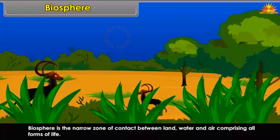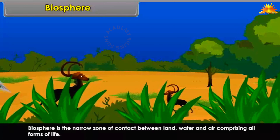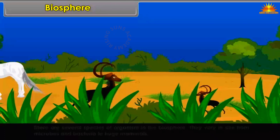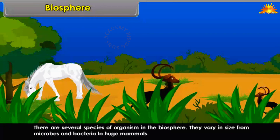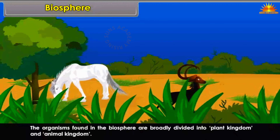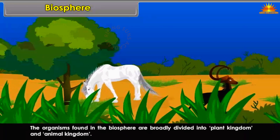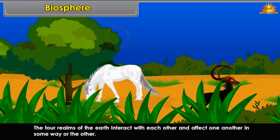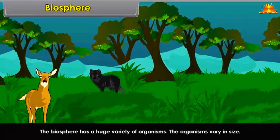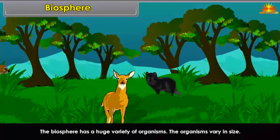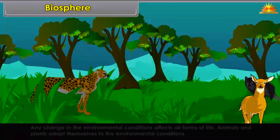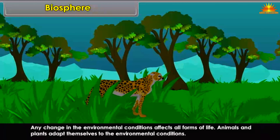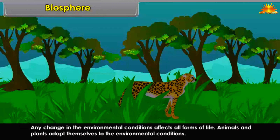Biosphere is the narrow zone of contact between land, water and air, comprising all forms of life. There are several species of organisms in the biosphere, varying in size from microbes and bacteria to huge mammals. The organisms are broadly divided into the plant kingdom and the animal kingdom. The four realms of the earth interact with each other and affect one another. Any change in environmental conditions affects all forms of life, and animals and plants adapt themselves to those conditions.